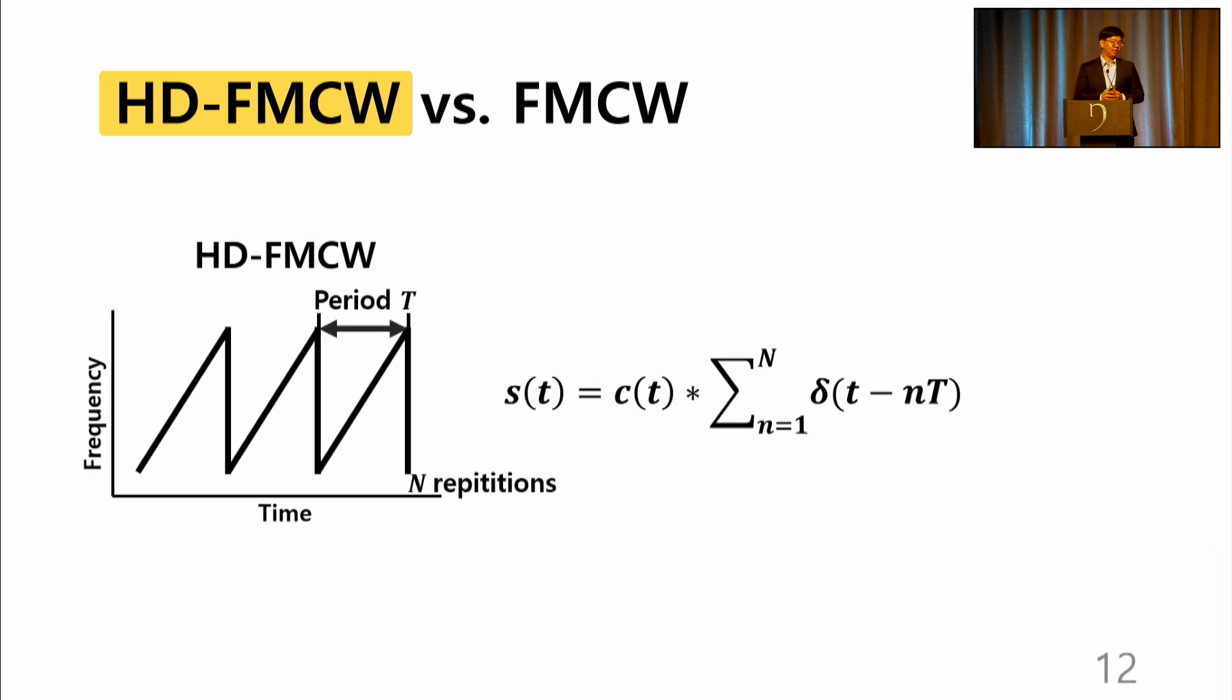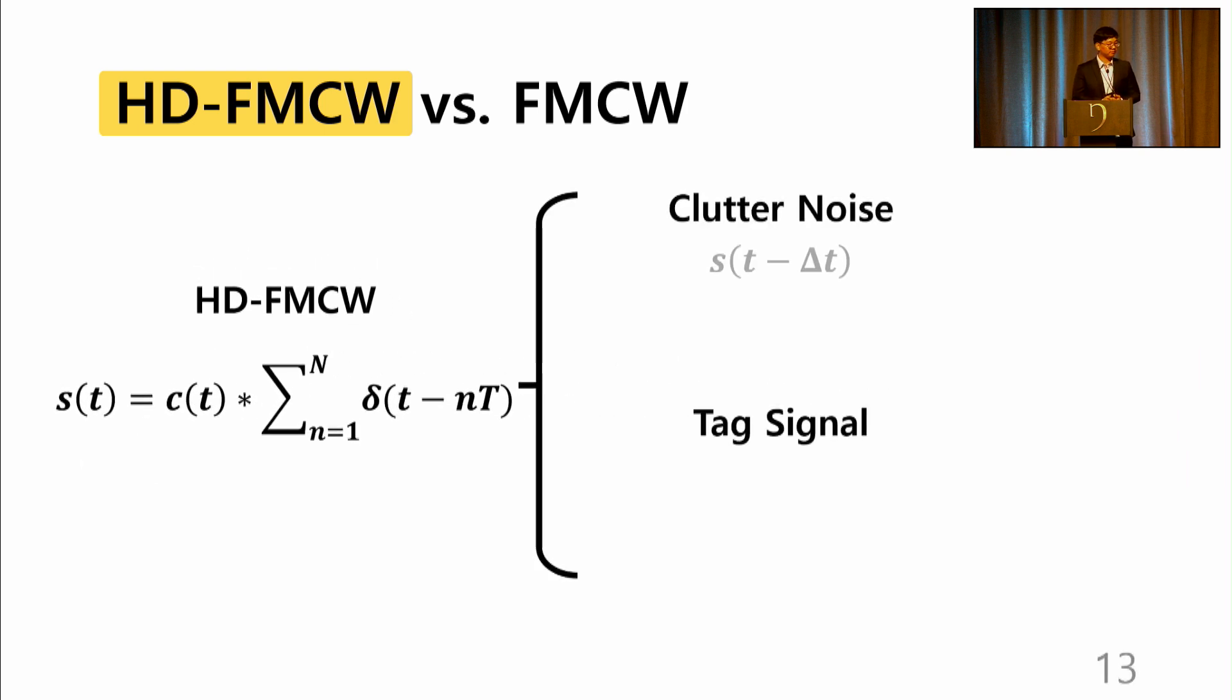The tag isolation in HD-FMCW can be explained as follows. Let us denote the HD-FMCW as s(t), which is basically n repetitions of chirp c(t). The large T denotes the period here. Clutter noise is essentially s(t) with the round-trip delay. Thus, the clutter noise sustains the period T. Now, by Fourier's theorem, a signal with period T is represented only at the multiples of 1 over T hertz. Note that this leaves other frequency bins empty.